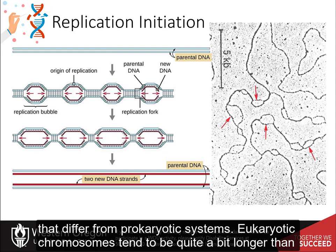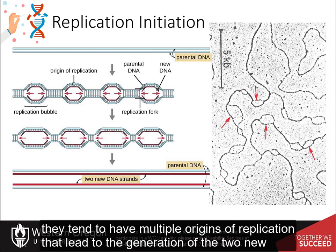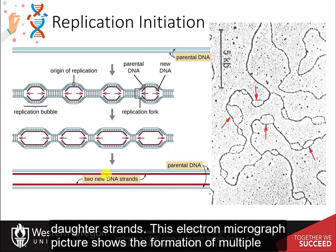Eukaryotic chromosomes tend to be quite a bit longer than prokaryotic ones and are typically linear in nature. Thus, one key major difference is that they tend to have multiple origins of replication that lead to the generation of the two new daughter strands.